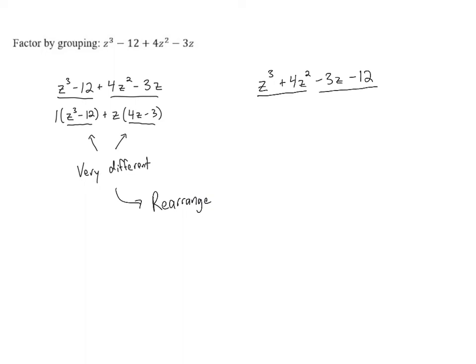If we look at the first group z³ + 4z², we notice that those terms both contain z². So we pull out a z², and that leaves us with leftovers z + 4.